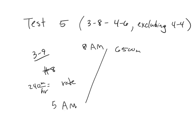The slope is indeed 240, so this is going to be y = 240x + b, where y is the elevation and x is the time. Now that we've been studying functions, we should understand that these are the same thing. Instead of y, I use h for height; instead of x, I use t for time. Same thing.